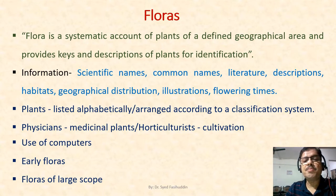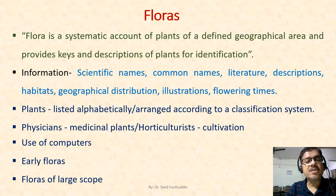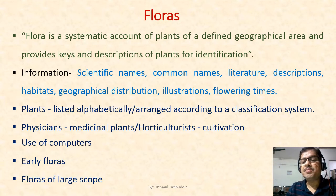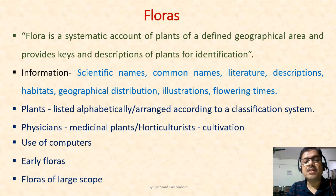A flora almost always contains scientific names and it may also include common names, literature references, descriptions, habitat, geographical distributions, illustrations, flowering times, and notes. Less often, floras include specialized information such as data on plant chemistry, reproduction, chromosome number, and population occurrences.